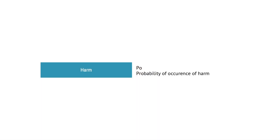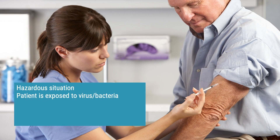When we estimate risk, it is the probability of occurrence of harm — or just PO — that we are looking for to type into our hazard traceability matrix. The probability of occurrence of harm is in turn dependent on the probability of occurrence of the hazardous situation, but they are not the same because not every hazardous situation leads to harm. In this picture, a patient receives some kind of injection. As soon as you puncture the skin, a hazardous situation occurs — the patient is exposed to a virus or bacteria.